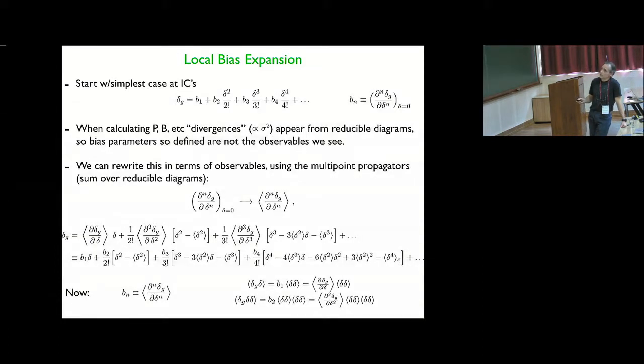So let's start with the simplest model of galaxy bias that goes back to the 80s. And so in the simplest model you assume that the density fluctuations for any tracers such as galaxies, sorry there is a delta missing in the first term, so it's linear in delta, quadratic in delta, cubic and so on. And you realize if you write something like this, when you calculate correlation functions such as power spectrum and bispectrum,